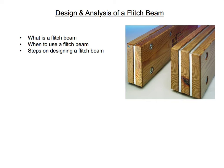A flitch beam consists of different materials — in this case steel and wood — so the section properties will have to be transformed in the design process so that the two materials experience the same strain and deformation. In a transformed section, one material is transformed into an equivalent quantity of the other material. In this case we'll be transforming the steel plate into a wood member, and I'll be showing you that right now.